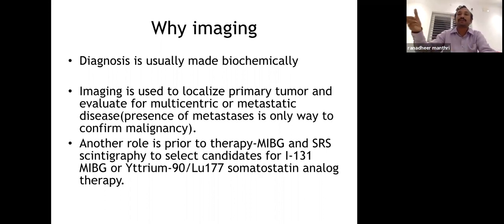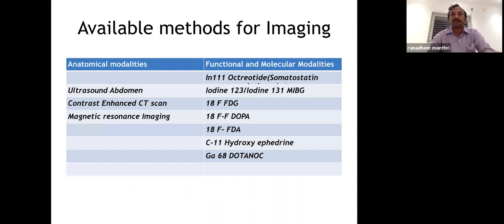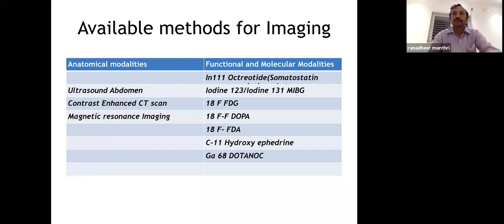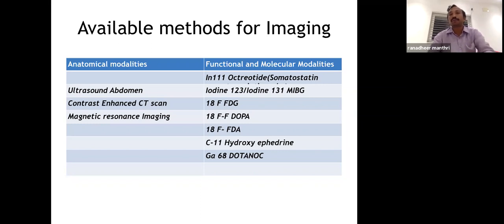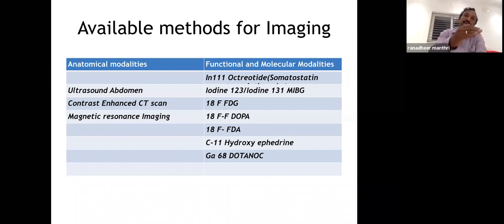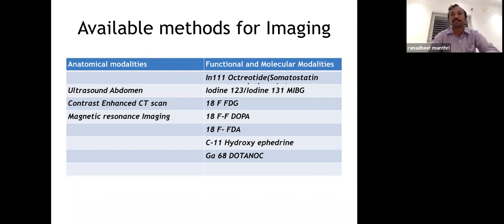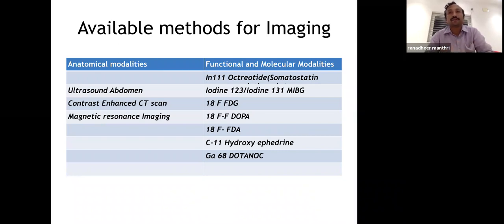Imaging is only for localization; diagnosis is always biochemical. Available methods include ultrasound, CECT, MRI, and functional imaging: In-111 octreotide, MIBG scan, FDG, FDA (fluorodopamine), C11-hydroxyephedrine, and gallium DOTATOC. CECT can detect pheochromocytoma based on attenuation and nodularity. Functional imaging is used when anatomical imaging fails or when metastasis is suspected. A common MCQ scenario: before taking a patient with medullary thyroid cancer to surgery, evaluate for metanephrines.